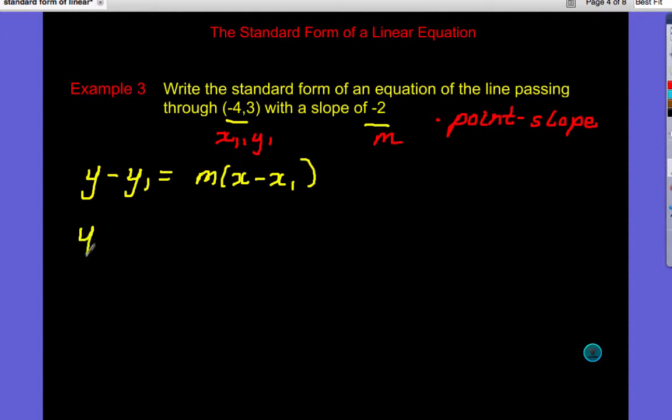Point Slope is Y minus Y1 equals M times the quantity X minus X1. So I go ahead and substitute. We have Y minus 3 equals my Slope of negative 2 times X minus X1. But my X1 is negative, so this becomes plus 4. So be careful. And now we start to distribute. So we have Y minus 3 equals negative 2X minus 8.